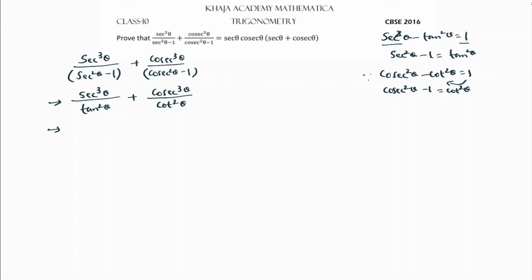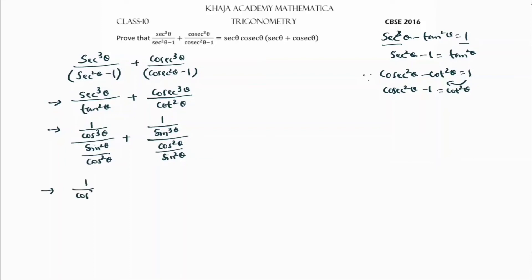Now I will change this ratio in terms of sin and cos. sec³θ I will write as 1/cos³θ, and tan²θ I will write as sin²θ/cos²θ. For cosec³θ I write 1/sin³θ, and cot²θ I write as cos²θ/sin²θ. Now for the next step: 1/cos³θ becomes reciprocal times cos²θ/sin²θ.